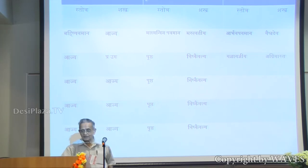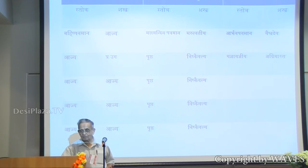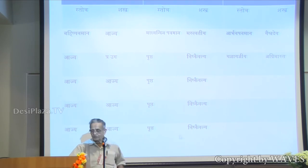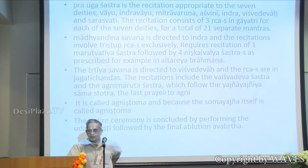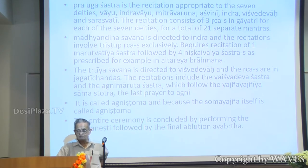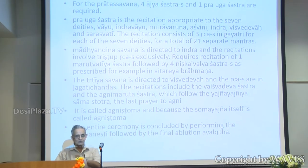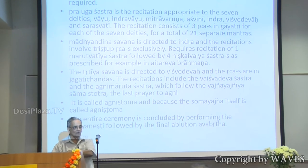There are stotras and shastras that have to be recited in each of the savanas — Prata savana, Madhyandina savana, and Tritia savana. There are five stotras and five shastras for Prata savana, five stotras and five shastras for Madhyandina savana, and two stotras and two shastras for Tritia savana. For Prata savana you need four ajashastras and one provogashastra. If you follow the suktas in Rig Veda, they have to follow this order.